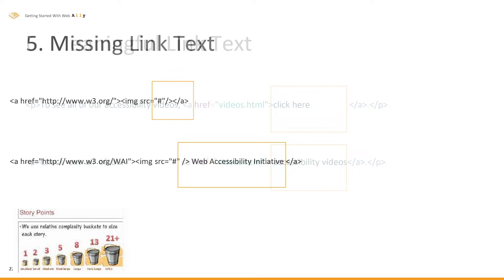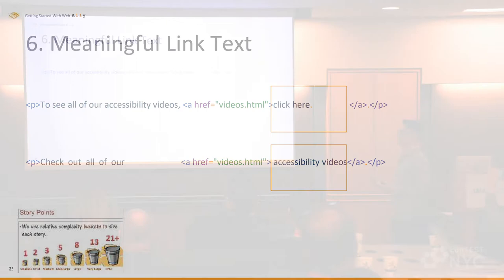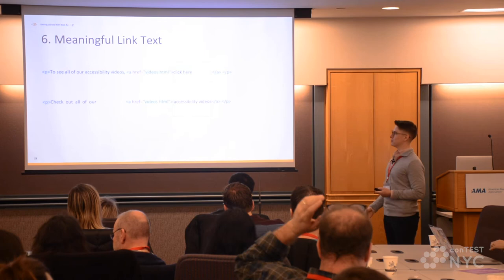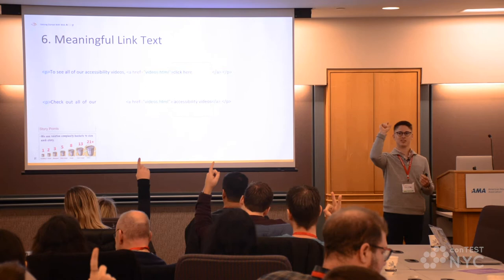And finally, meaningful link text. This one does have link text, but what could be wrong? You have link text, but what do you get exactly? It would take just one or two points to add something more descriptive — like 'accessibility videos' — to tell the user where the link goes. Very quick fix that goes a long way. Anytime you see 'learn more' or 'click here,' those are big red flags to keep an eye out for.